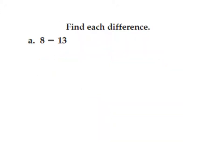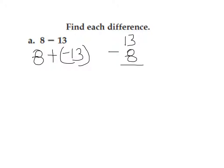Find each difference. Problem A: 8 minus 13. Using the additive inverse, I'm going to keep the 8, change the subtraction to addition, and change 13 to negative 13. I notice that I have two signs that are different — a positive and a negative — so I'm going to subtract, putting the larger on top and smaller on the bottom. 13 minus 8 is 5, and I make it negative 5 because 13 has the largest absolute value. The answer is negative 5.